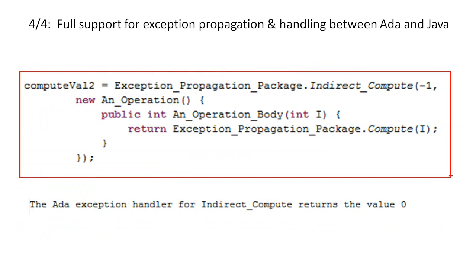The call to ADA's indirect compute function passes minus 1 and therefore causes an exception. Java calls ADA's indirect compute function, which invokes a callback implemented in Java, that in turn calls ADA's compute function, which raises an exception that Java does not catch. Therefore the exception returns to the caller, namely indirect compute on the ADA side, where it is handled by returning a value of 0. The ADA output is shown.